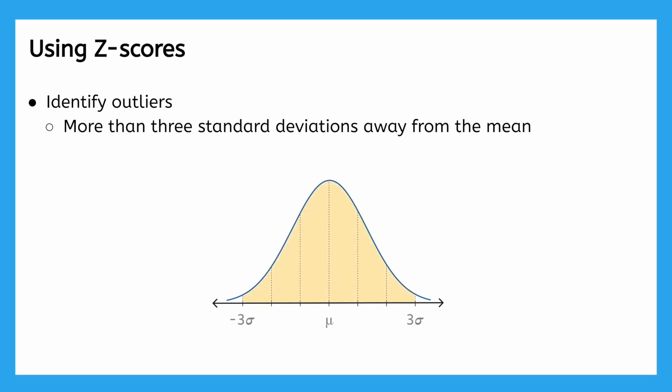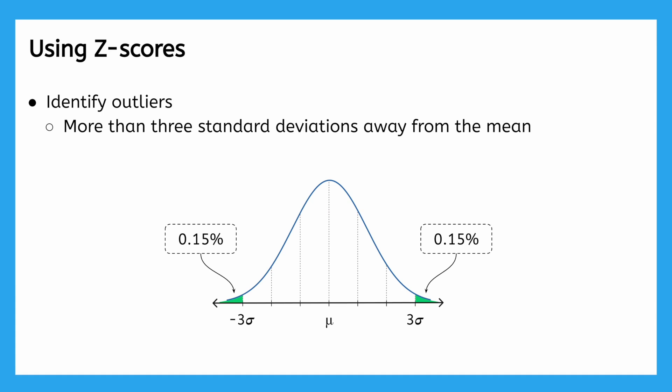The empirical rule tells us that for normally distributed data, about 99.7% of all values fall within 3 standard deviations of the mean. That means only about 0.15% of values fall above or below 3 standard deviations, making them very rare. Identifying when values are extreme is crucial in inferential statistics, where we analyze claims and make inferences about populations based on data from a sample.